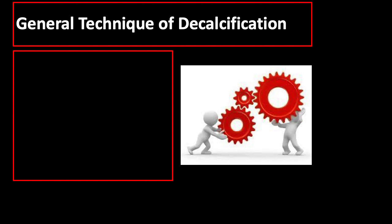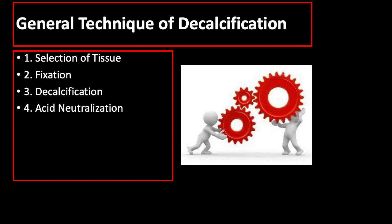Now let us discuss the general technique of decalcification. There are five techniques that need to be followed: first is selection of tissue, followed by fixation, then decalcification, followed by acid neutralization, and lastly thorough washing.